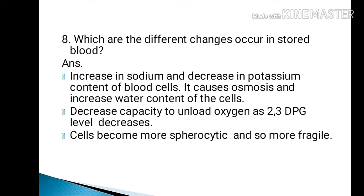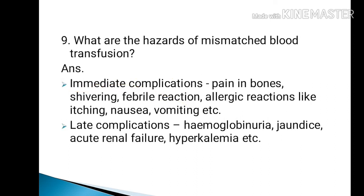Changes that occur in stored blood include an increase in sodium and decrease in potassium content of blood cells, causing osmosis and increased water content of the cells, decreased capacity to unload oxygen as 2,3-DPG levels decrease, and cells becoming more spherocytic and fragile. Hazards of mismatched blood transfusion include immediate complications such as pain in bones, shivering, febrile reaction, allergic reactions like itching, nausea, and vomiting. Late complications include hemoglobinuria, jaundice, acute renal failure, and hyperkalemia.